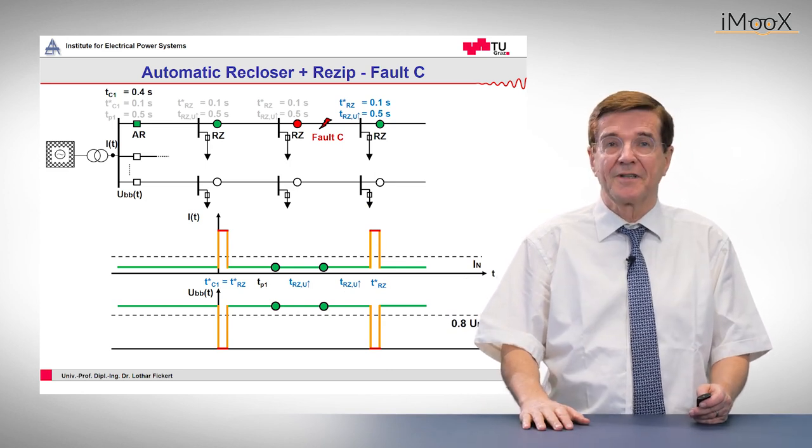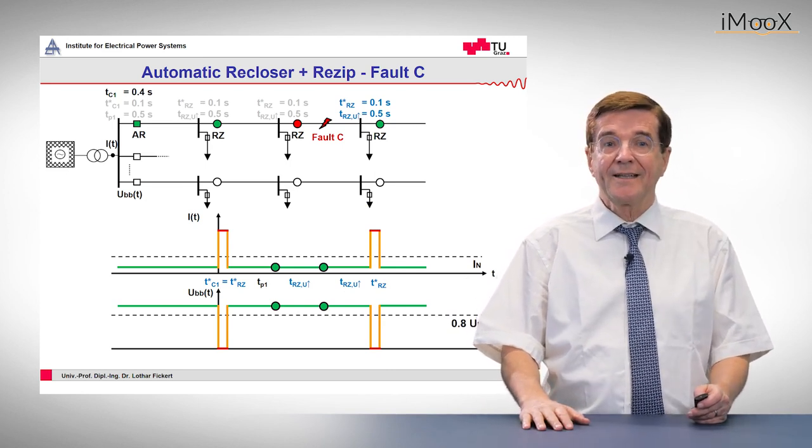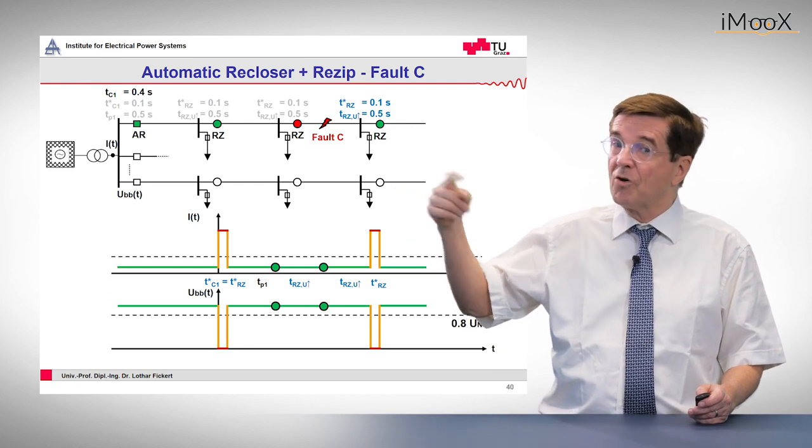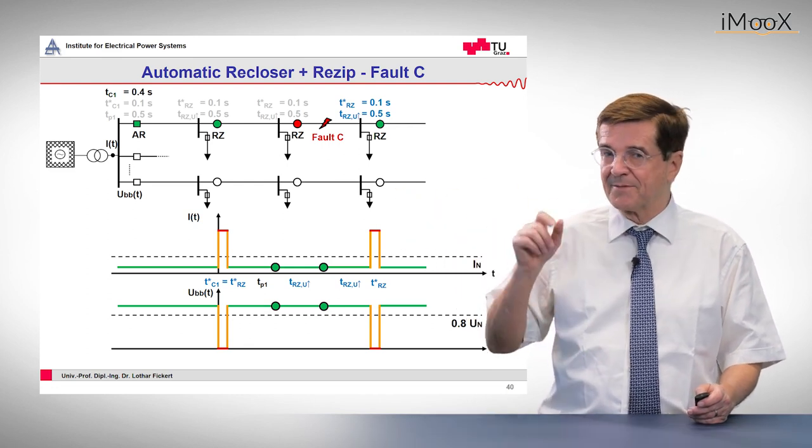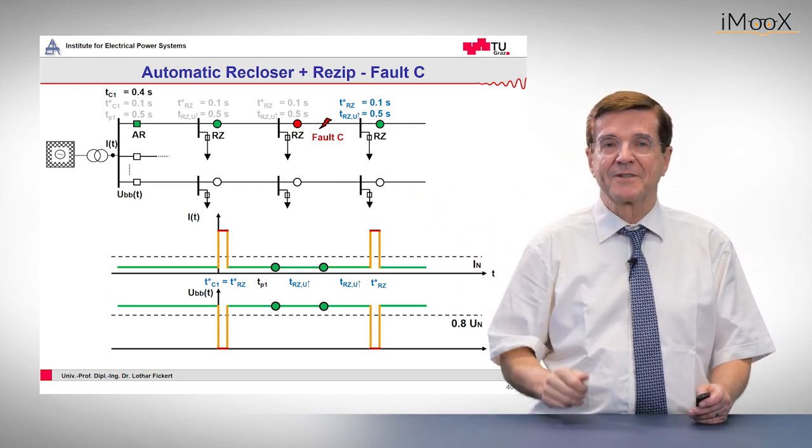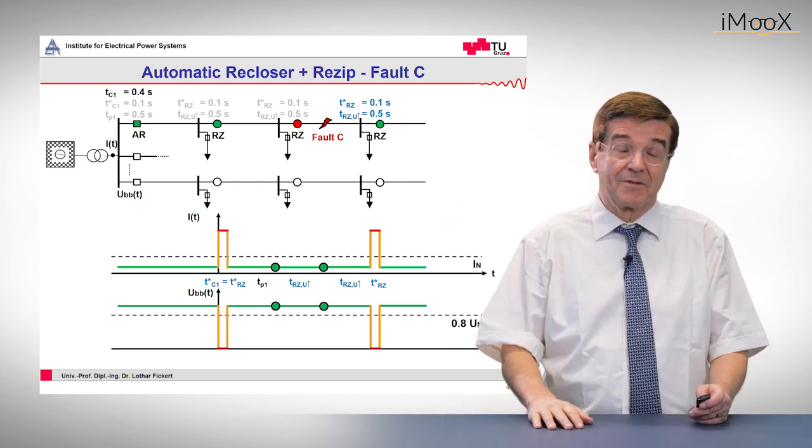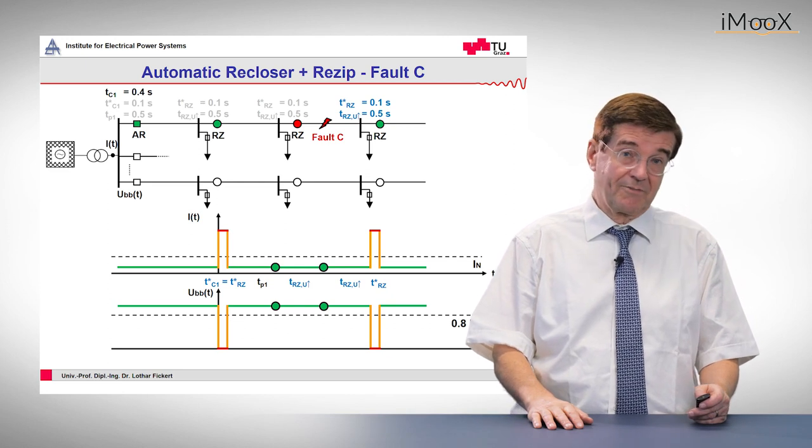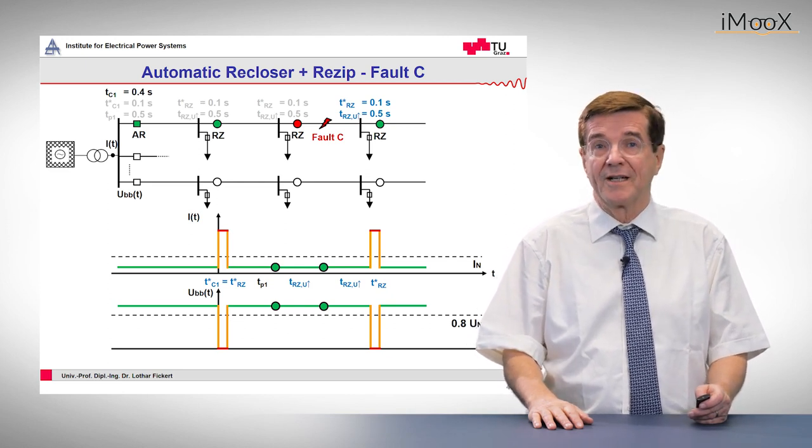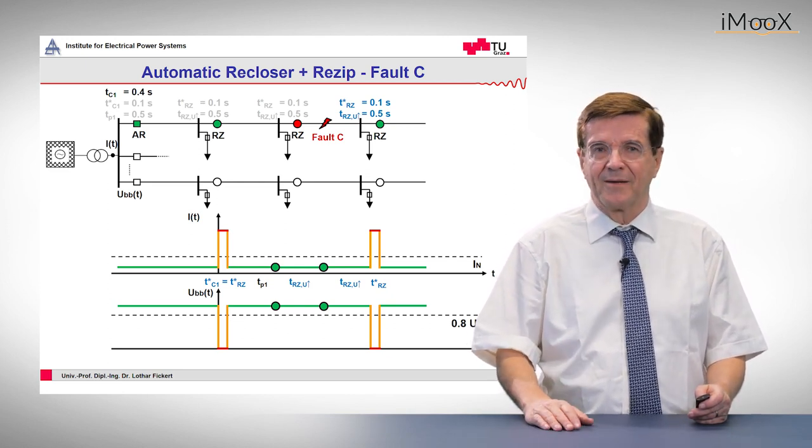That is not possible in this type of network configuration. And the bus bar, that means all customers in this network, they experience two voltage dips, which with the use of proper equipment are sometimes maybe less than 100 milliseconds. So they are more or less without any harm to the customers.